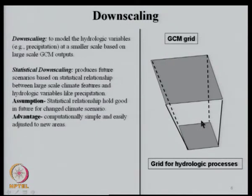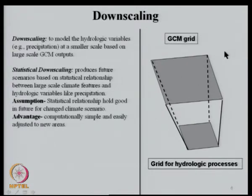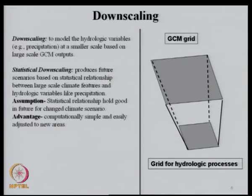Once we develop the statistical relationship based on historical data, we hold it intact and use it for future projections. The GCM provides future projections of the predictor — mean sea level pressure — and using the same statistical relationship, we project precipitation into the future. The main advantage of statistical downscaling is that it is computationally simple, and you can develop a new relationship for any new area or different GCM, whereas dynamic downscaling requires a different regional climate model for every GCM.